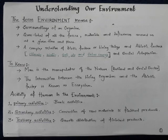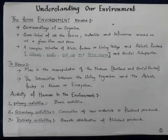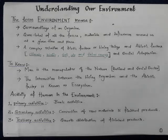Man is a super manipulator of nature, and hence is known as the rational and social factor. The interaction between the living organism and the abiotic factor is known as an ecosystem. Abiotic factors are all those non-living things that support life on the earth — for example, temperature, sunlight, water, and soil. All these factors support the growth of organisms.